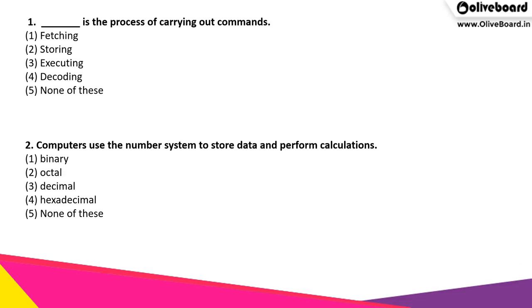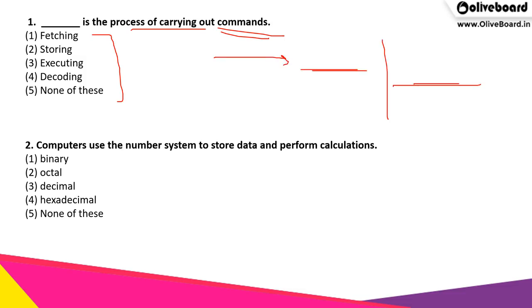The first question: which of the following is the process of carrying out commands? Whenever we give a command to the computer, through which process can we carry out that particular command? The correct answer is executing. It is through executing that we carry out the commands that are given to the computer.